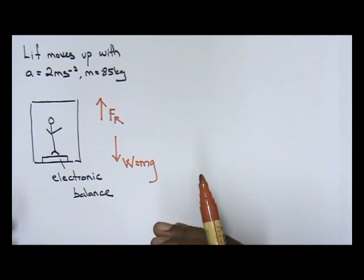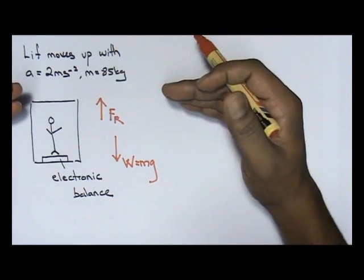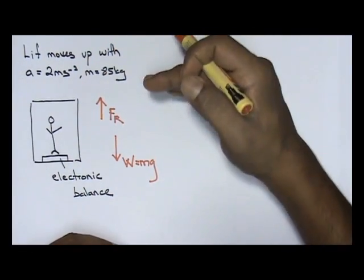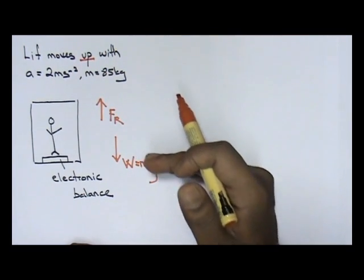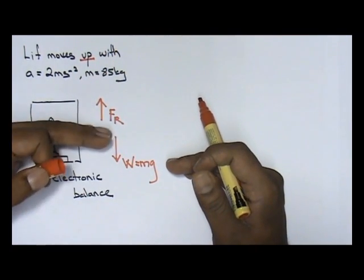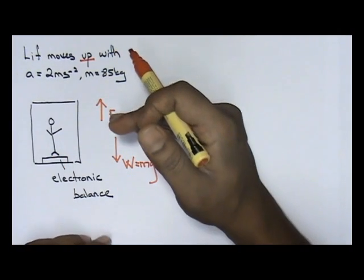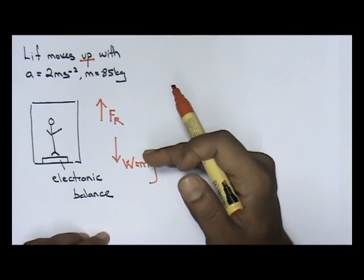Okay, now if the lift moves up, one logic question. If the lift moves up over here, which is higher? FR or mg? Now, technically, if anything that goes up with acceleration, it means FR is higher than mg.